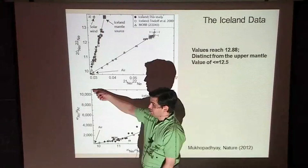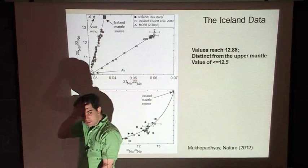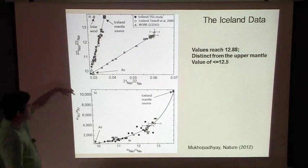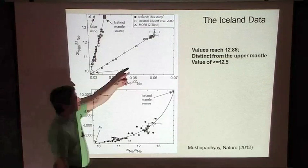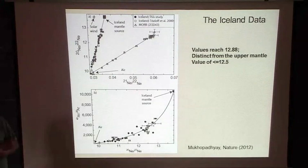We're assuming the mantle neon-20/22 is no higher than the Sun. We don't know of anything actually higher than the Sun. Meteoritic values — what's called a planetary neon signature in carbonaceous chondrite — fall down in 20/22. Some meteorites have a composition at exactly 12.5, which has been advocated for the mid-ocean ridge basalt source. But what we have measured in Iceland is values much higher — up to 12.9 — so 12.5 can't be a suitable starting composition for the deep mantle, at least.